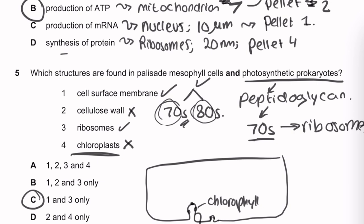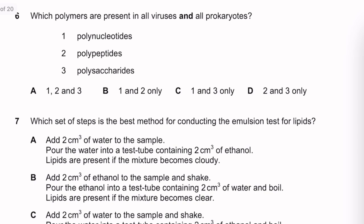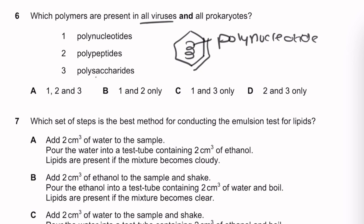Question 6: Which polymers are present in all viruses and all prokaryotes? Viruses have a nucleic acid core (DNA or RNA — a polynucleotide) and a protein capsid (a polypeptide). Polysaccharides are not present in all viruses. So the answer is polynucleotides and polypeptides — options 1 and 2.